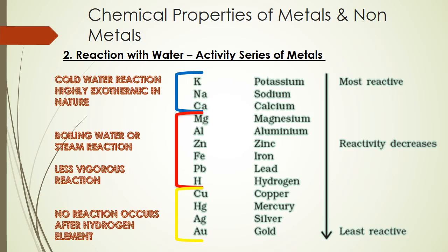Magnesium, aluminum, zinc, iron, lead, and hydrogen react only with boiling water or steam, and the reaction is much less vigorous. Copper, mercury, silver, and gold don't react with water at all — they are least reactive in nature.